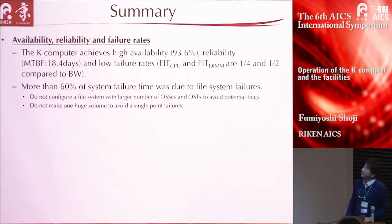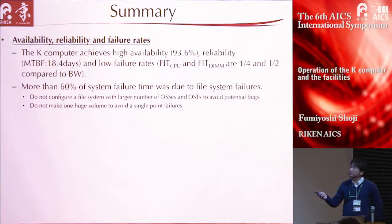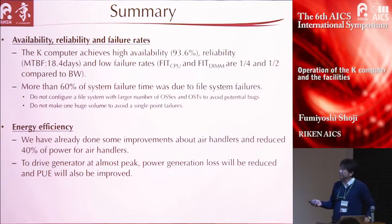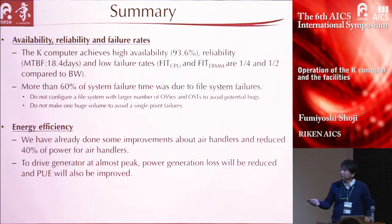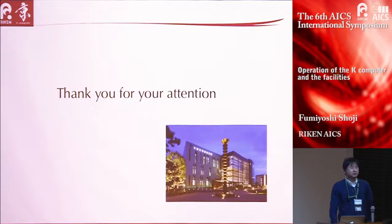Let me summarize. The K-computer achieved higher availability, reliability, and low failure rates. More than 60% of system failure time was due to file system failure. For energy efficiency, we have already done improvements to the air conditioner and reduced power for air handlers by 40%. Driving the generator at near peak will reduce power generation loss and improve PUE. That's all. Thank you very much.